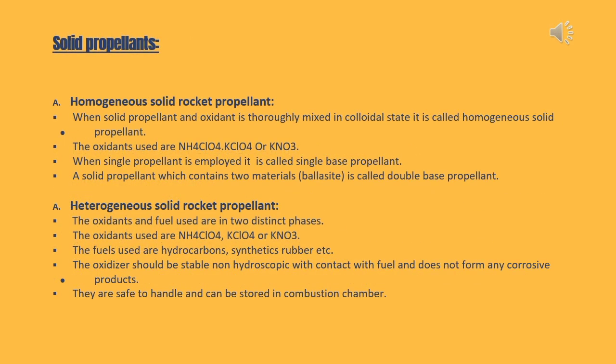Solid propellants. A. Homogeneous solid rocket propellant: when solid propellant and oxidant are thoroughly mixed in a colloidal state, it is called a homogeneous solid propellant. The oxidants used are ammonium perchlorate or potassium nitrate. When a single propellant is employed, it is called a single base propellant; when two materials are used, it is called a double base propellant. B. Heterogeneous solid rocket propellant: the oxidants and fuels are in two distinct phases. Oxidants used are ammonium perchlorate or KNO₃, and fuels used are hydrocarbons, synthetic rubber, etc. The oxidizer should be stable, non-hygroscopic, and should not form any corrosive products on contact with fuel. They are safe to handle and can be stored in the combustion chamber.